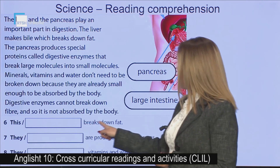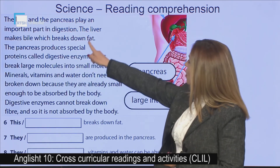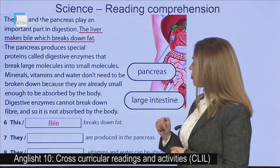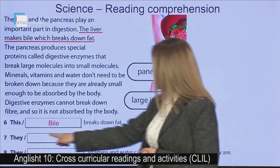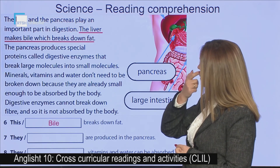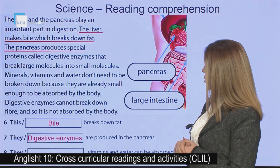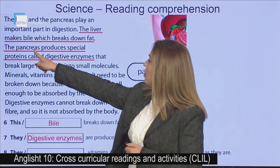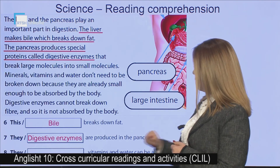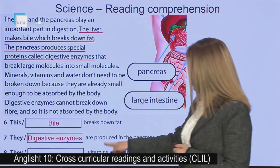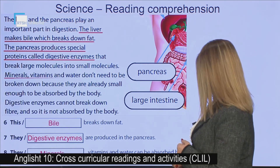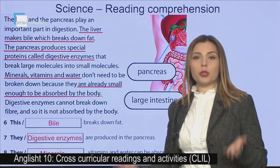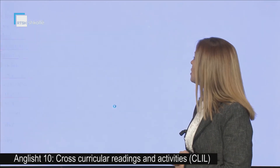What breaks down fat? The bile. Bile breaks down fat, as we read. And for number seven: what is produced in the pancreas? The digestive enzymes — they are produced in the pancreas. And number eight: minerals, vitamins and water can be absorbed by the body as they are. So this is what we learned about our digestive system.